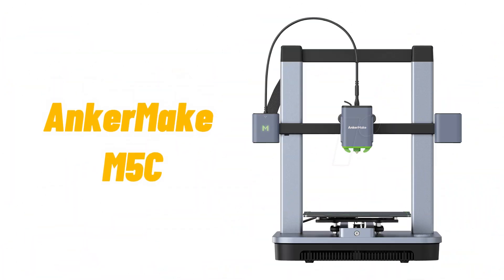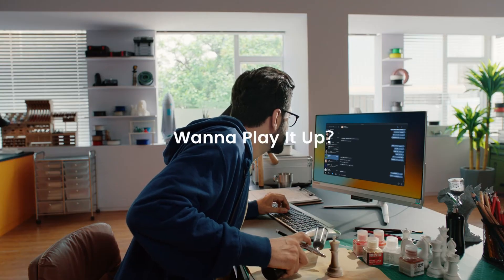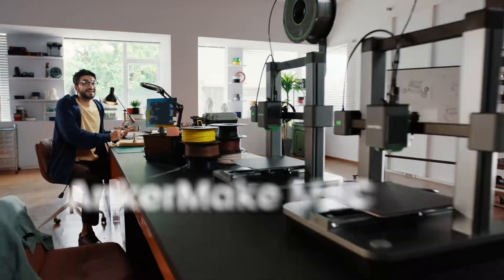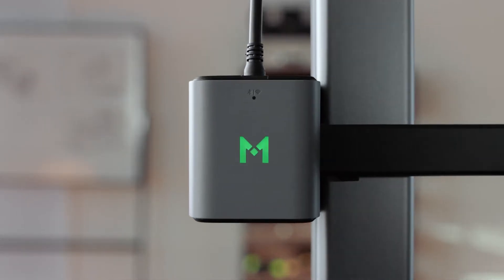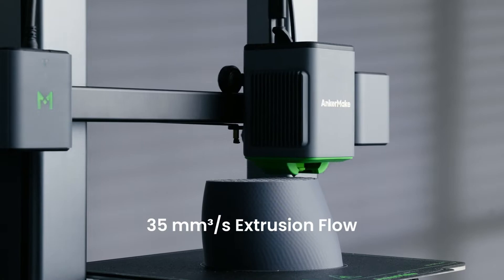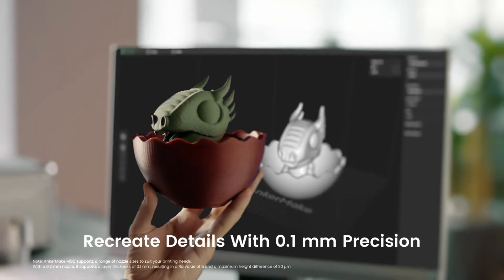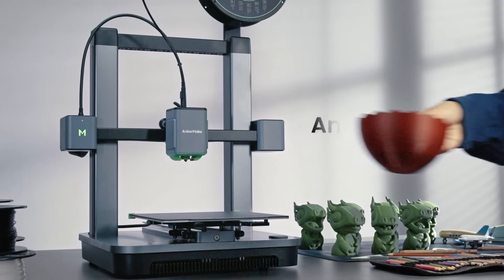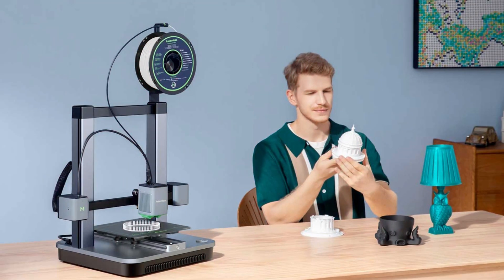Number 6, Ankomake M5C 3D Printer. This printer delivers exceptional quality prints at incredible speed, revolutionizing the 3D printing experience. Equipped with cutting-edge PowerBoost 2.0 technology and an advanced ultra-direct extruder, it achieves impressive printing speeds of up to 500mm per second while maintaining a precision level of 0.1mm.